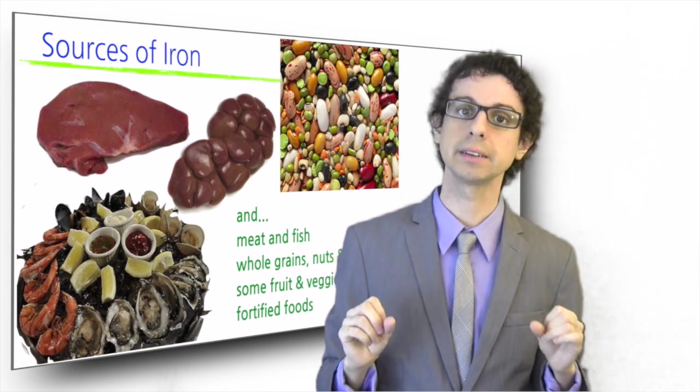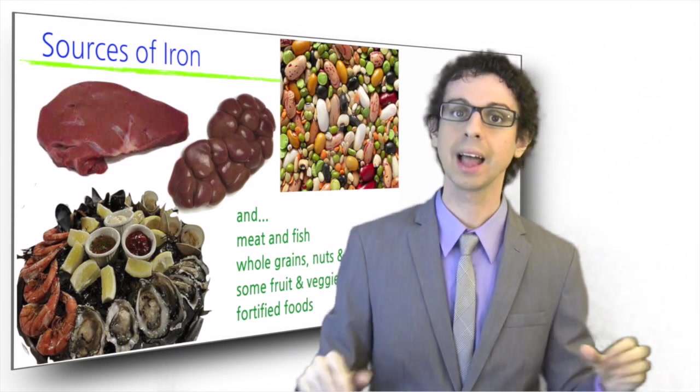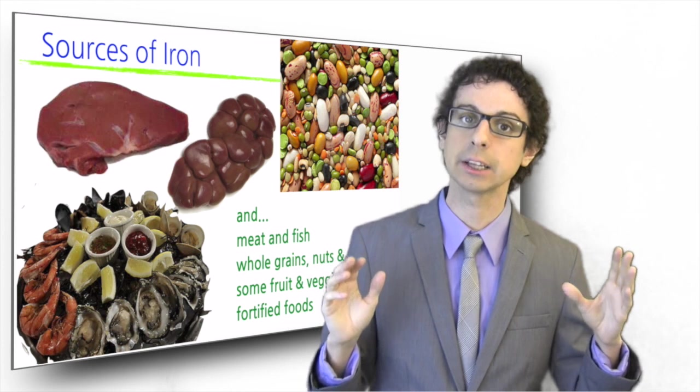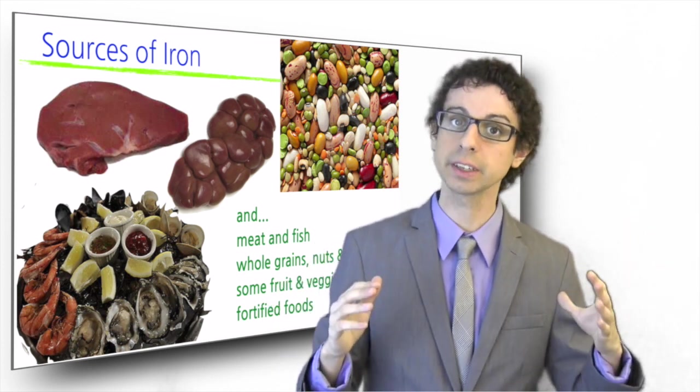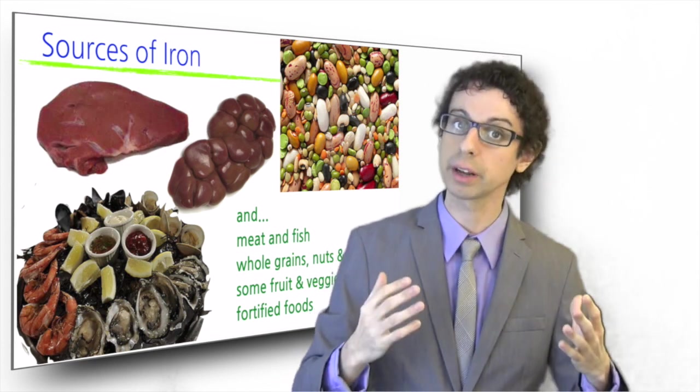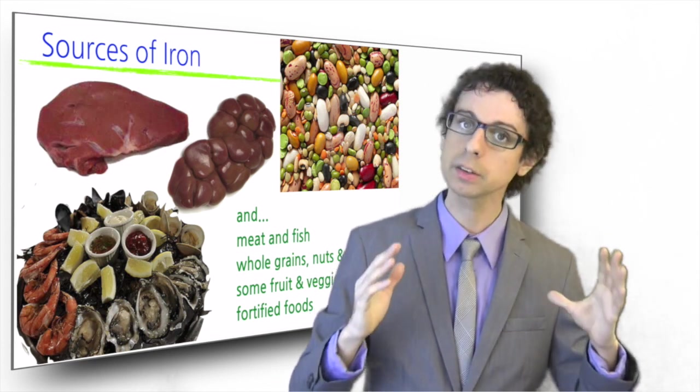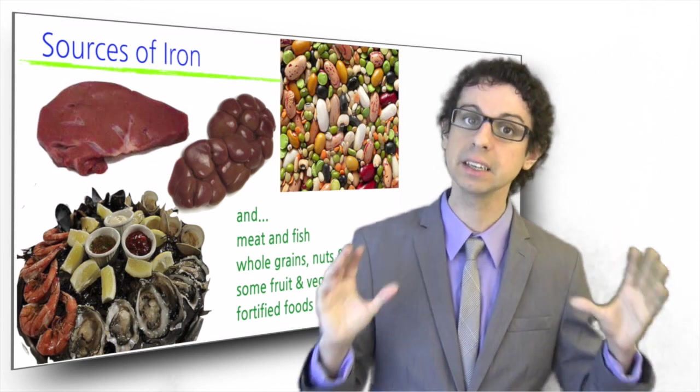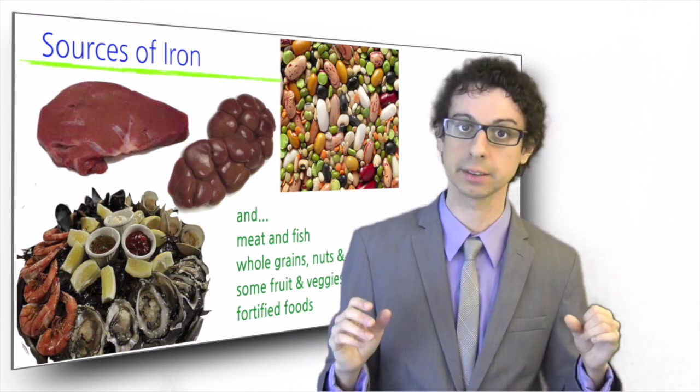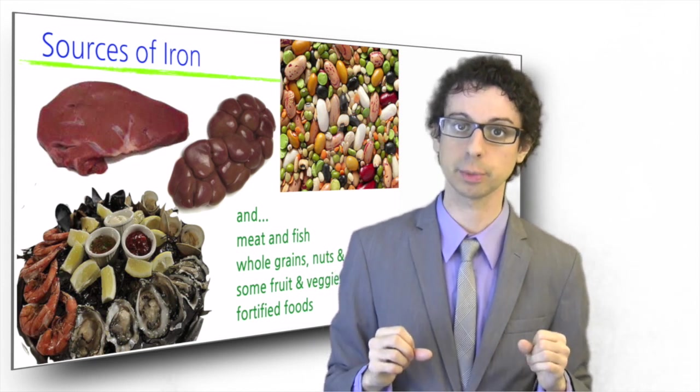Shellfish and organ meats are excellent sources of iron. Lentils, beans and other legumes also have a lot. Non-organ meat and fish contain less, but because half of it is heme iron and therefore more efficiently absorbed, they are also considered good sources of iron. Whole grains can significantly contribute to our iron needs as well as nuts, seeds and some fruits and vegetables.